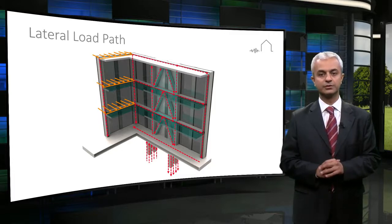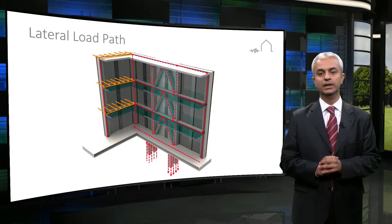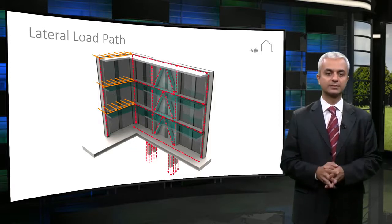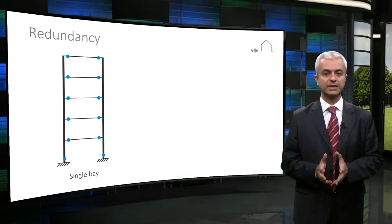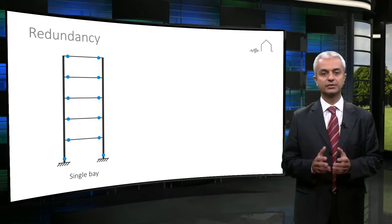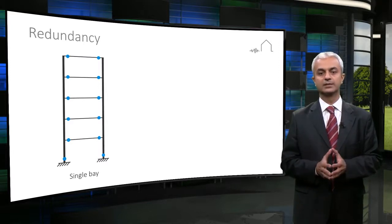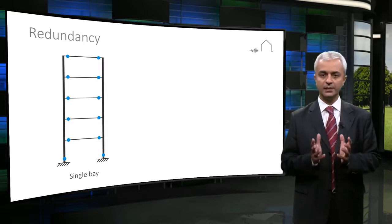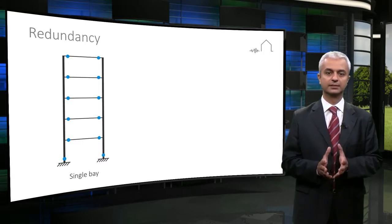A structure should have a continuous load path as described above to withstand the earthquake effects. In case of seismic effects, structures having alternative or spare load paths are more reliable. A term related to this is called redundancy.